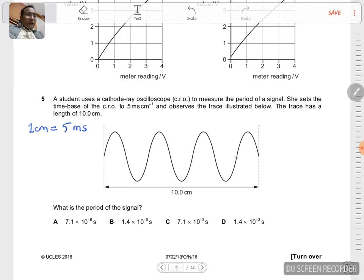We must have 3.5 waves equal to 10.0 centimeters, which means one wave should be equal to 10.0 by 3.5 centimeters. Now since one centimeter equals five milliseconds, this much centimeter will amount to 10.0 by 3.5 into five milliseconds.